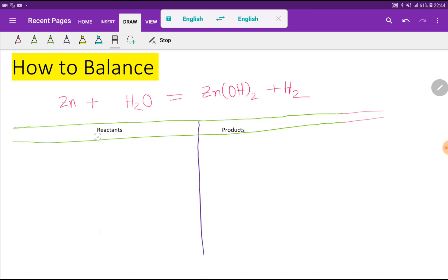This is the reactant side and this is the product side. Now we have to count the atoms. On the left-hand side, we have one zinc atom, two hydrogen atoms, and one oxygen atom.